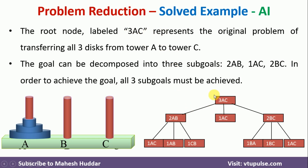The task 2AB — moving two blocks from A to B — cannot be done directly. We must perform multiple moves. First, move one tile from A to C; second, move one tile from A to B; third, move the block from C to B. The task 1AC, moving one remaining block from A to C, can be done directly. For 2BC — moving two blocks from B to C — first move the smaller block to A, then move the larger to C, then move the smaller from A to C. That gives us 1BA, 1BC, and 1AC.